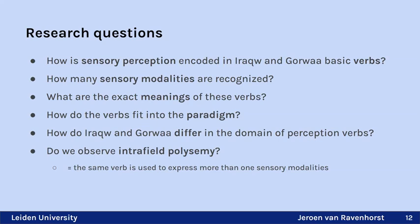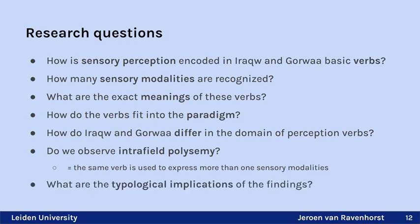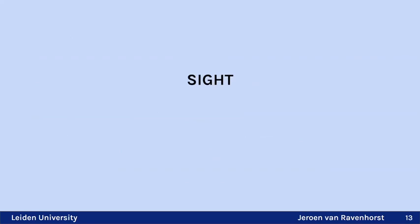For example, in Avatime, a language from Ghana, the verb for hearing also expresses taste, touch, and smell, with a separate perception verb for sight — this is what we call interfield polysemy. The final question concerns the typological implications of the findings.